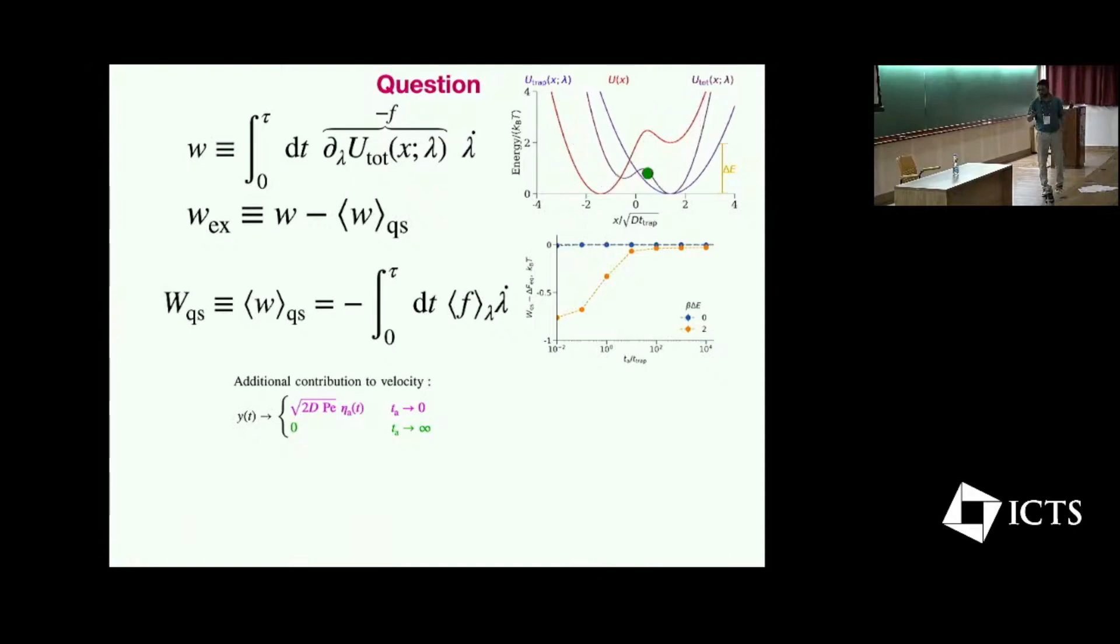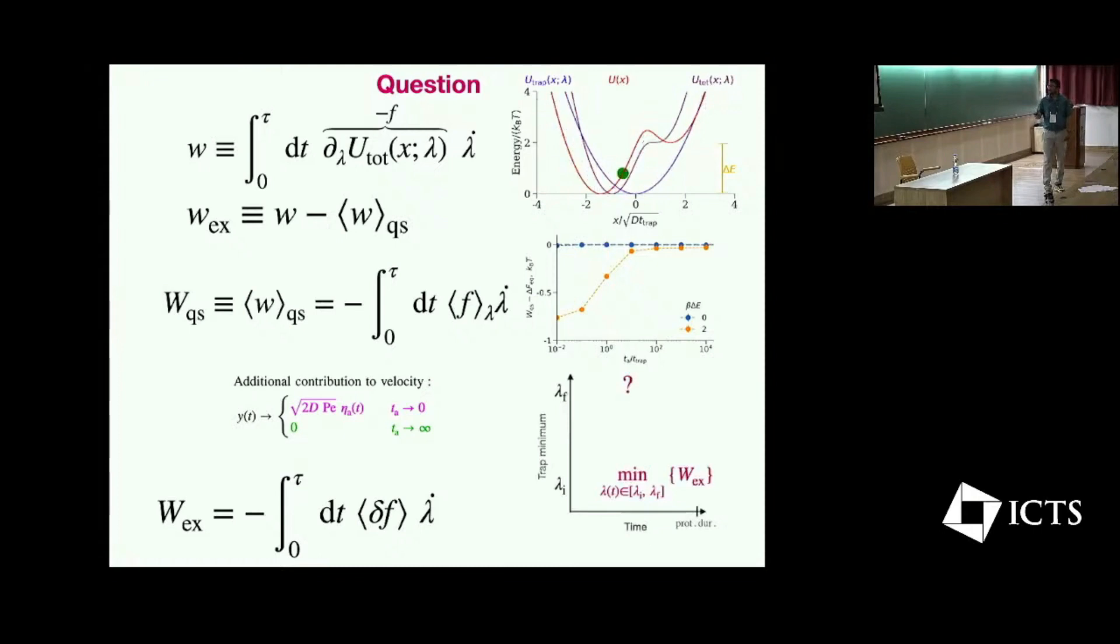So now if I have this stochastic work, I can take average over multiple realizations and that will be the average excess work, and this is a central quantity of interest for this talk. So the question that I am asking is if I minimize this dissipation or excess work over all sets of protocols, and the protocol starts from lambda I to lambda F where lambda I indicates the initial trap location, what will be the optimal protocol? Is it linear protocol or maybe non-linear one? We don't know. It's a very complicated problem even for passive particles.